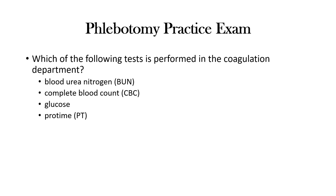The next question is: Which of the following tests is performed in the coagulation department? A. Blood urea nitrogen, B. Complete blood count, C. Glucose, or D. Pro-time. You have five seconds. You should have been thinking pro-time. This test is performed in the coagulation department.